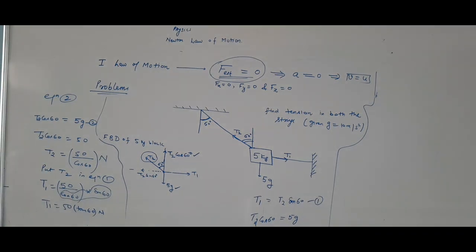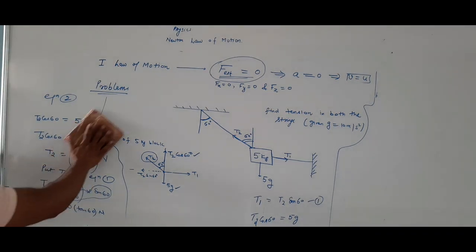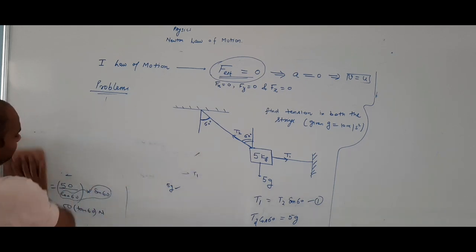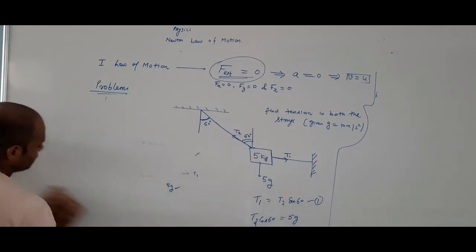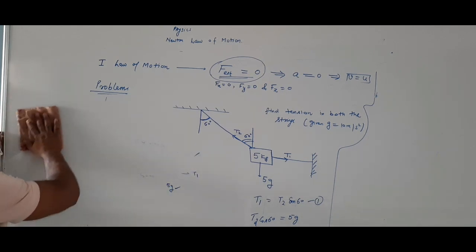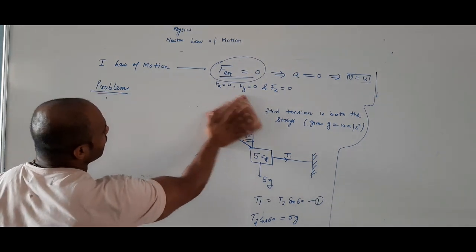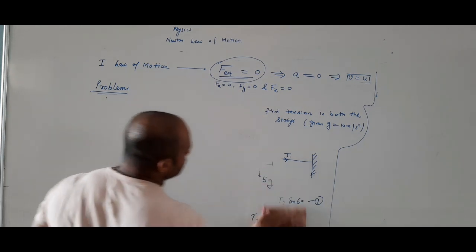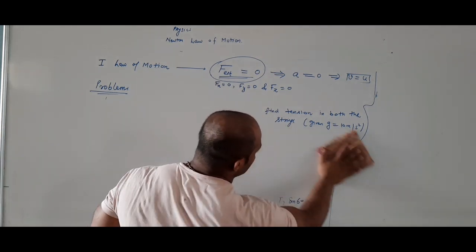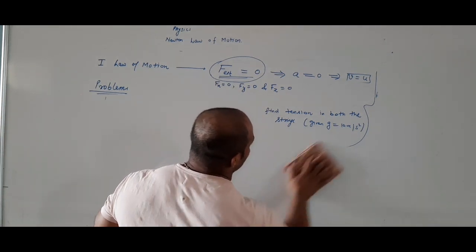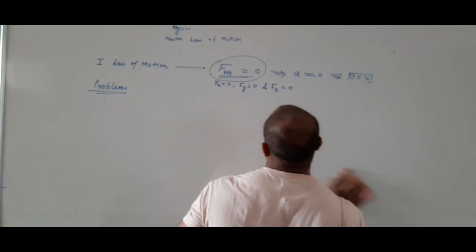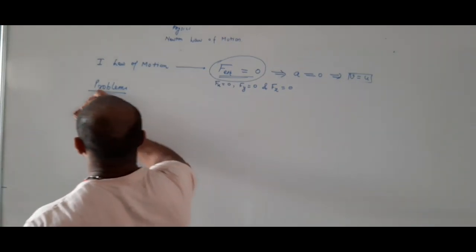Yeh ek second type of problem thi. Ismein humne kya kara? Humne resolve kara — along x-axis aur y-axis. Aisi aur problems hume millengi aage. Next type of problem is on inclined plane.